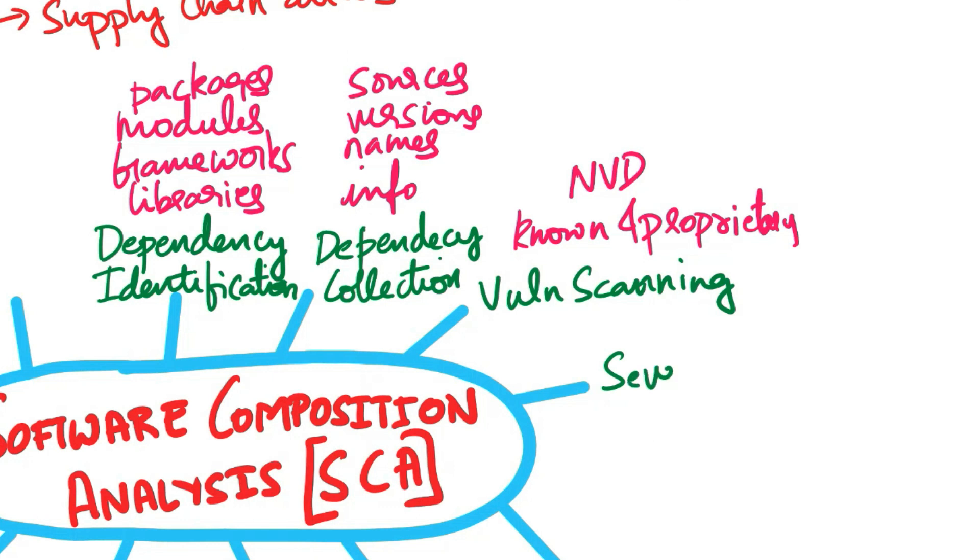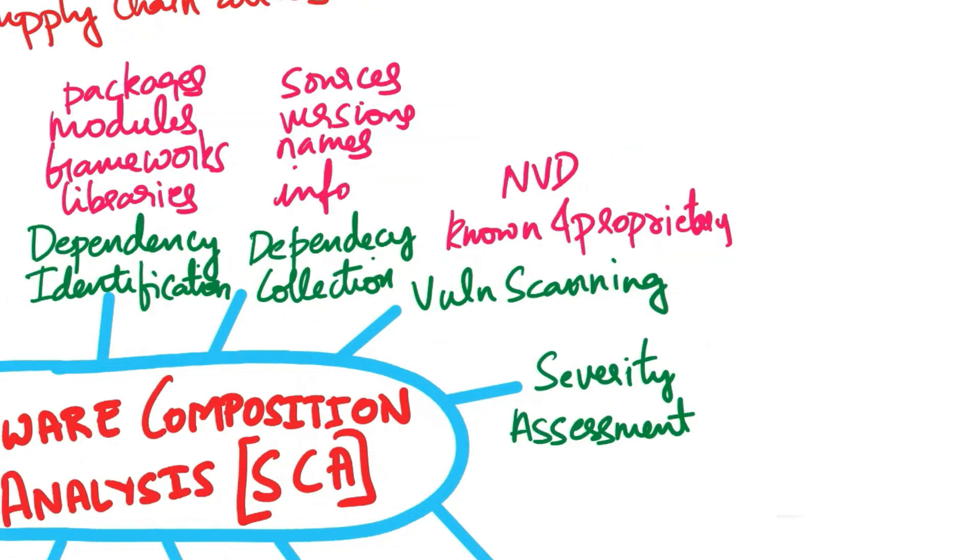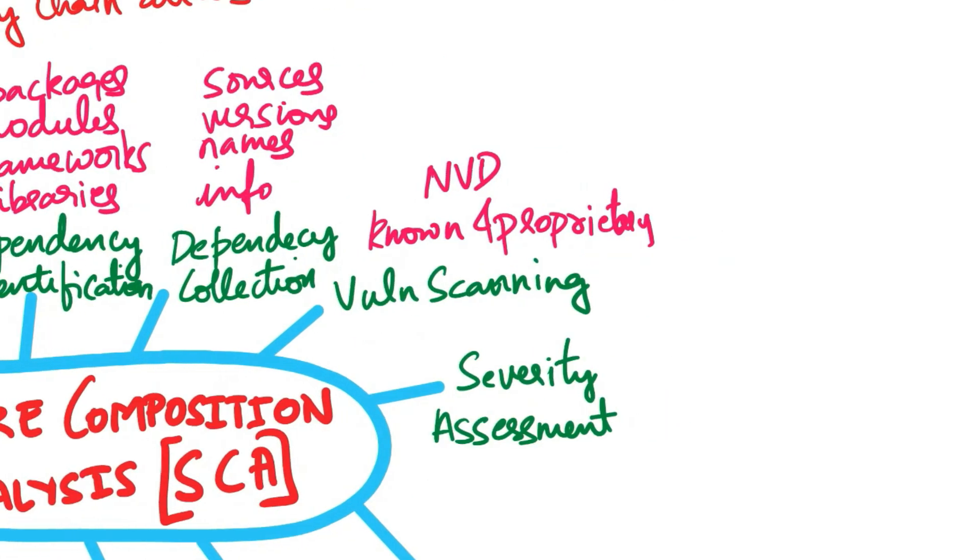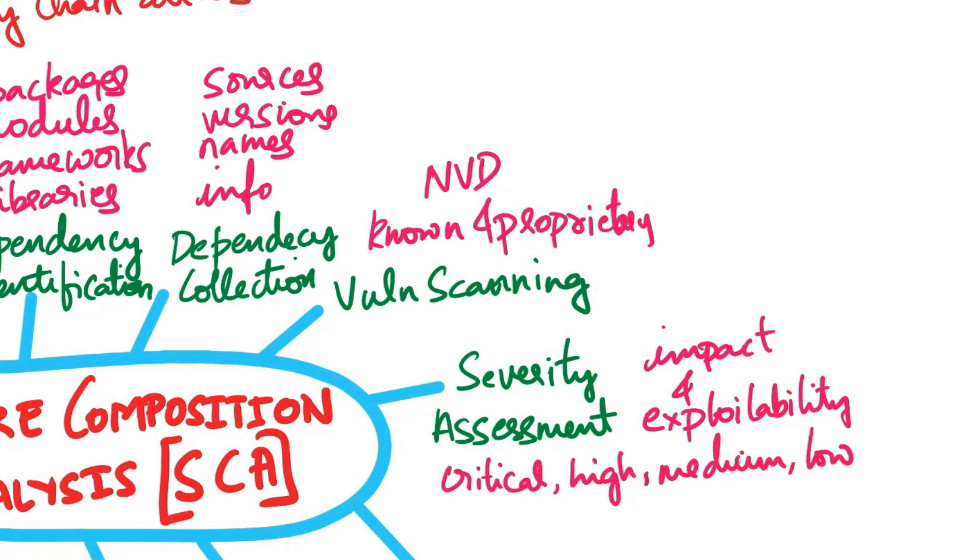Next step is severity assessment. For each identified vulnerability, SCA tools assign a severity rating based on the impact and exploitability of the issue. Vulnerabilities are typically categorized as critical, high, medium, or low severity.